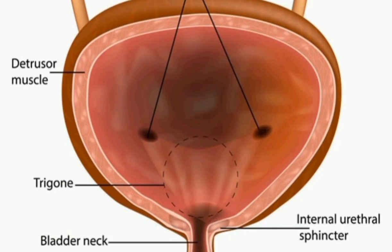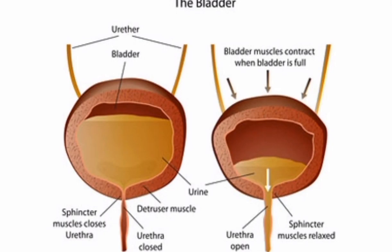The urinary bladder is a median storage sac situated in the lower abdominal cavity. It is a pear-shaped structure. Both the ureters open into the urinary bladder, which stores urine. The storage capacity of the urinary bladder is 300 to 800 ml. The urine stored in the urinary bladder creates pressure on the bladder walls, which sends signals to the sphincters present at the opening of the urinary bladder into the urethra. When these sphincters open, the urinary bladder releases urine to the urethra.